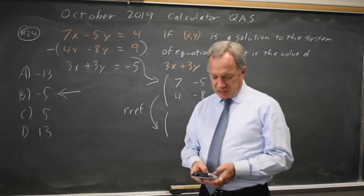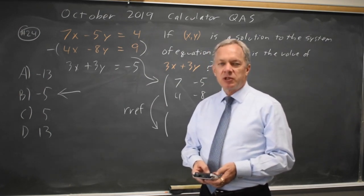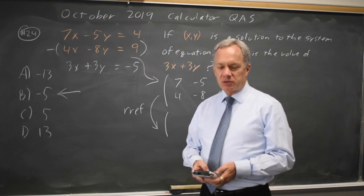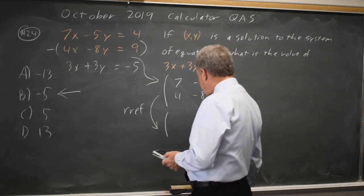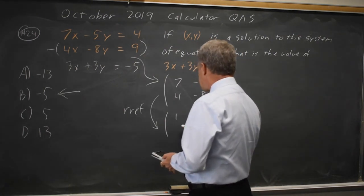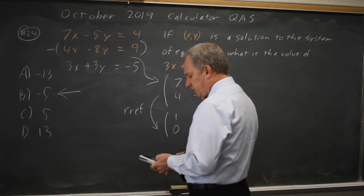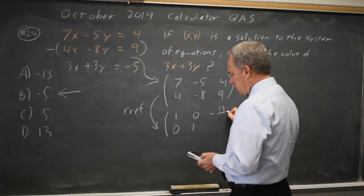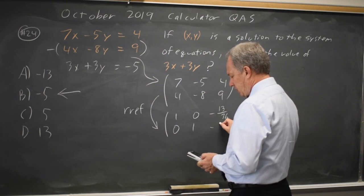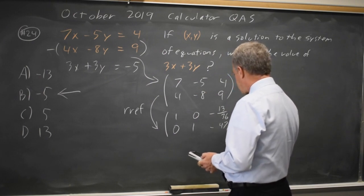And matrix A, you cannot type in bracket, letter A, close bracket, you have to go to the matrix option for this to work. And it gives the reduced row echelon form is 1, 0, 0, 1. And the calculator will give it to you in fractions, negative 13 over 36, negative 47 over 36.